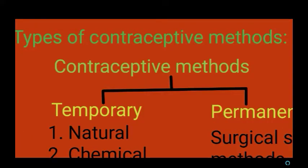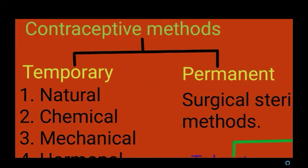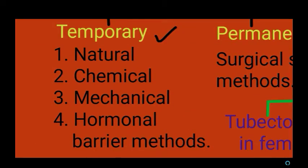Contraceptive methods are broadly divided into two groups: temporary contraceptive methods and permanent contraceptive methods. Under temporary contraceptive methods, there are four different types: natural method, chemical method, mechanical method, and hormonal barrier methods.